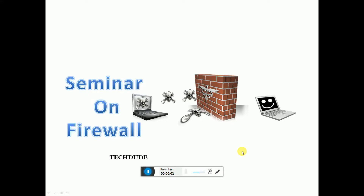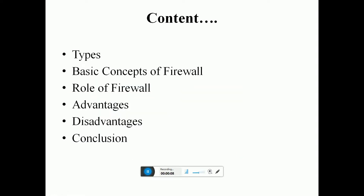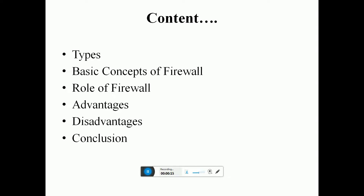The topic is firewall. The contents are: types of firewalls, basic concept of firewalls, role of firewalls, advantages and disadvantages of firewall, and conclusion. There are five types of firewalls: packet filtering firewall, circuit level gateway firewall, stateful inspection firewall, application level gateway firewall, and next-generation firewall.